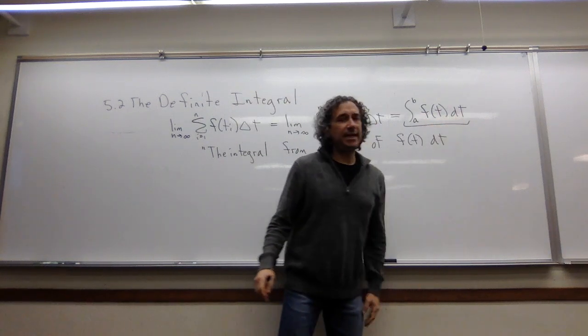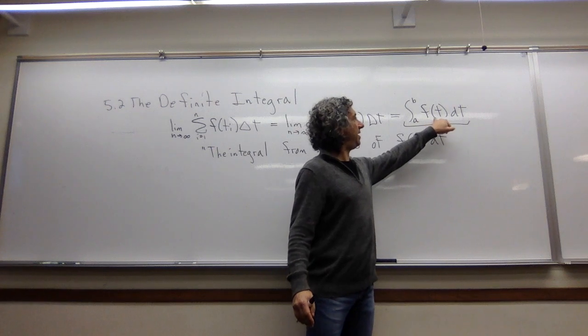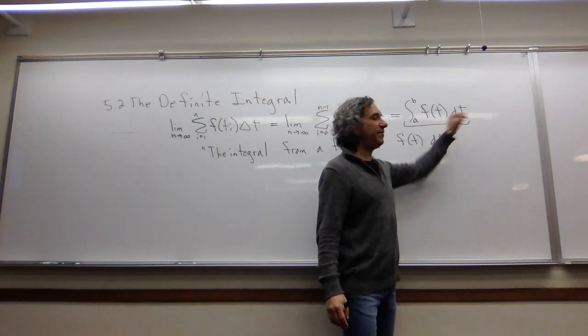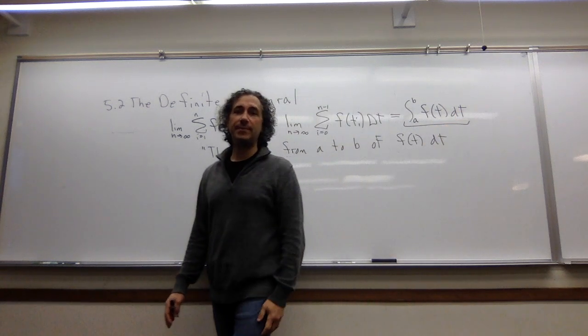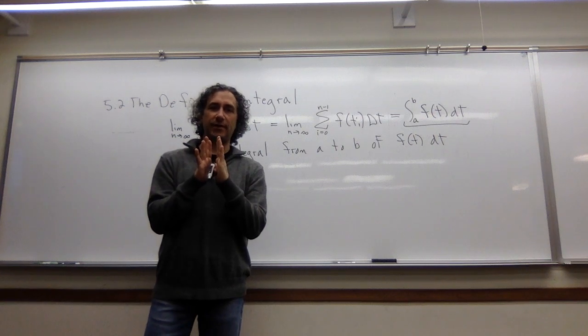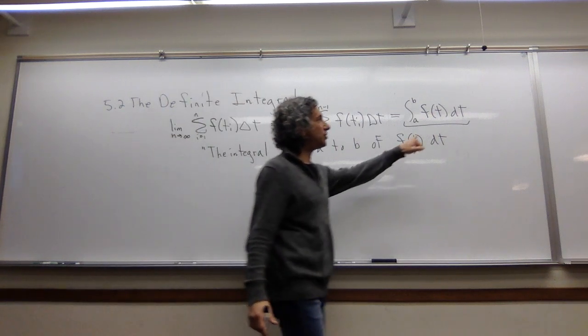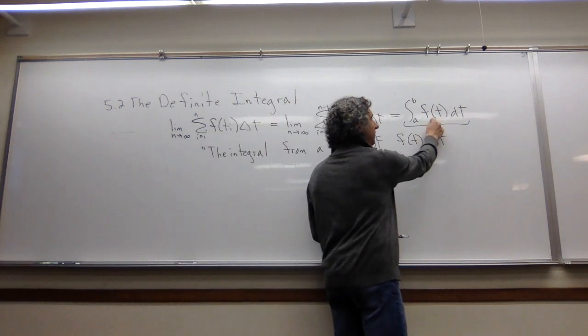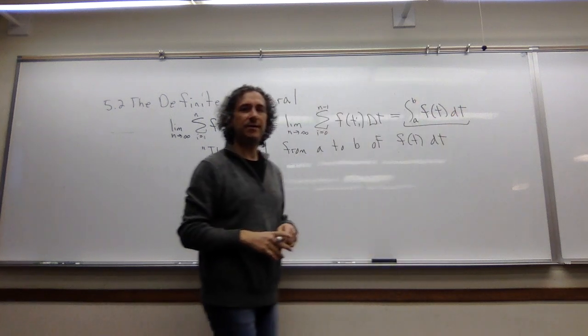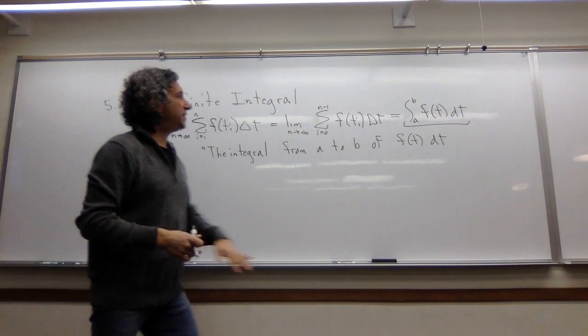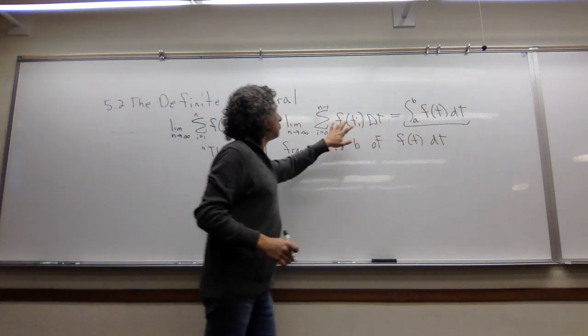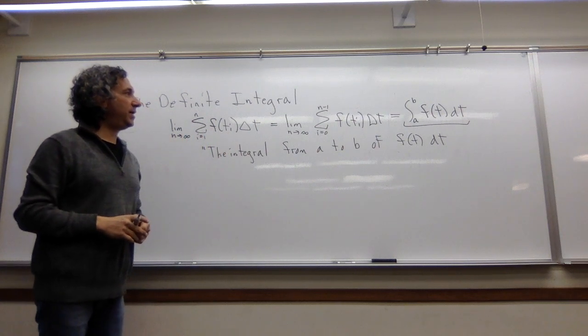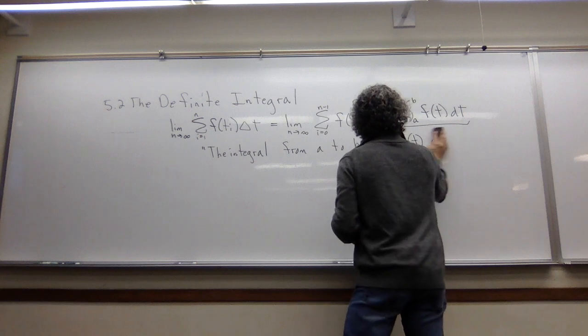f of t dt looks like I'm multiplying my functional value, for example the velocity, times dt. We've seen dt before when we talked about derivatives. dt is an infinitesimal interval. Except I have to say, you're not actually multiplying. It's just part of the notation. So this is not f of t times dt. We can't divide out dt. It just looks that way. This integral is representing this limit.